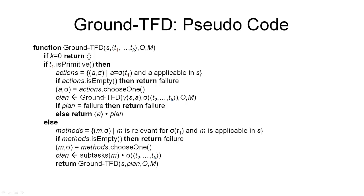The input to this recursive function is a planning problem: an initial state, a total order task network, a set of operators, and a set of methods.